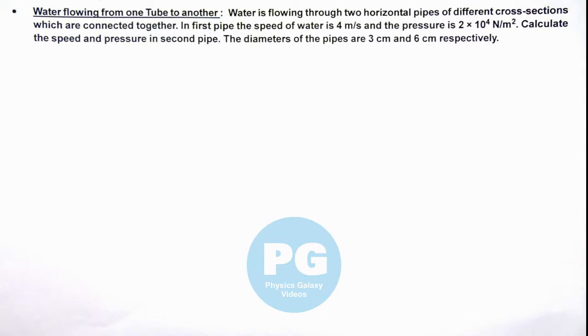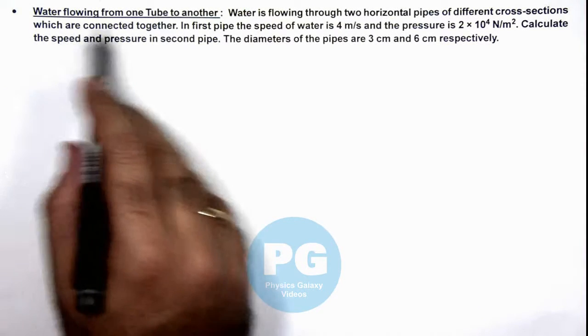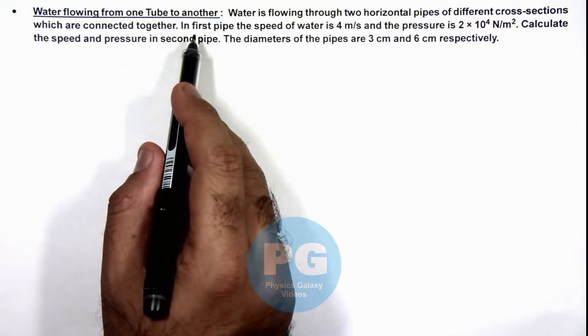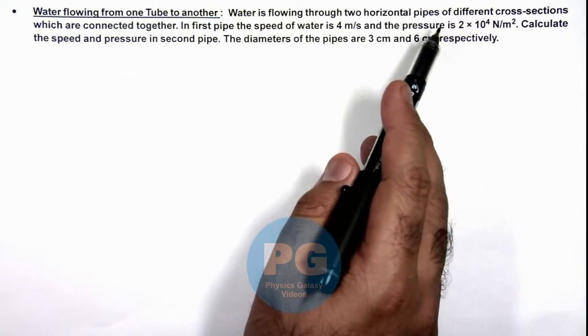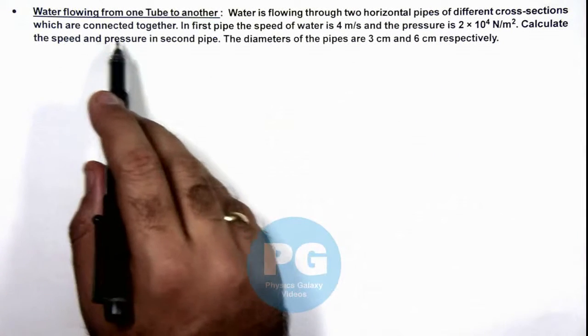In this illustration we'll analyze water flowing from one tube to another. Here we are given that water is flowing through two horizontal pipes of different cross-sections which are connected together.